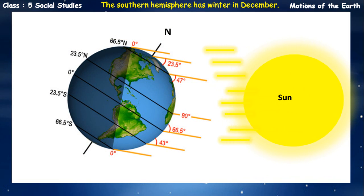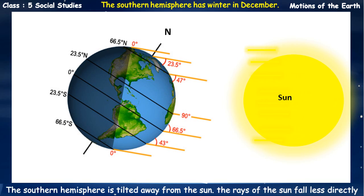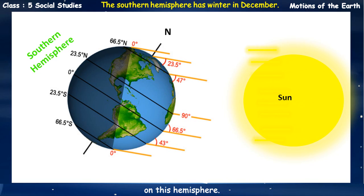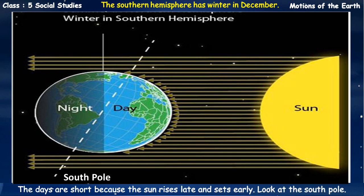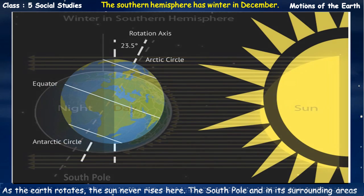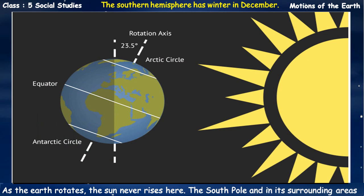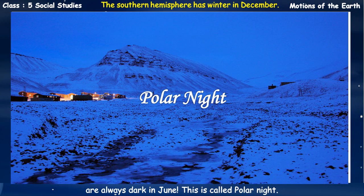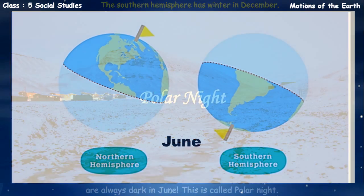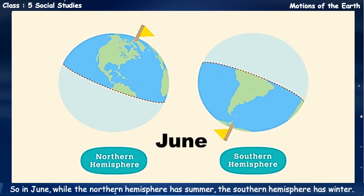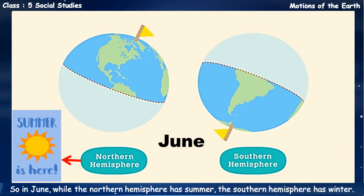The Southern Hemisphere has winter in June. The Southern Hemisphere is tilted away from the sun, so the rays of the sun fall less directly on this hemisphere. Look at the globe to understand this. The days are short because the sun rises late and sets early. As the Earth rotates, the sun never rises at the South Pole – the South Pole and its surrounding areas are always dark in June. This is called Polar Night. So in June, while the Northern Hemisphere has summer, the Southern Hemisphere has winter.